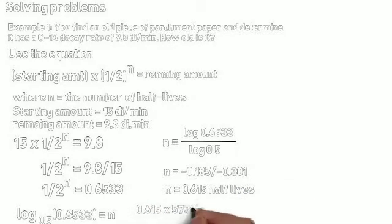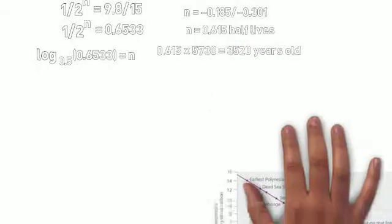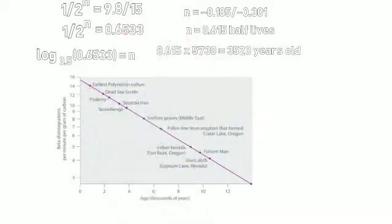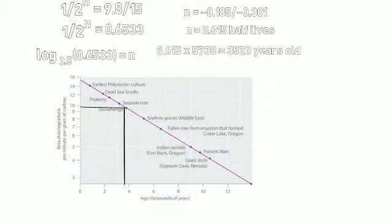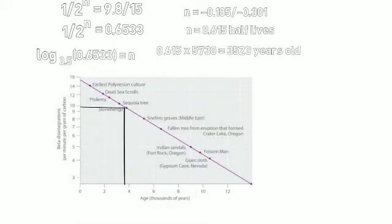So it's a half-life for carbon-14. It's 5,730 years. The object is 3,520 years old. And you can see, if we look at our graph here, that's exactly what we end up with.